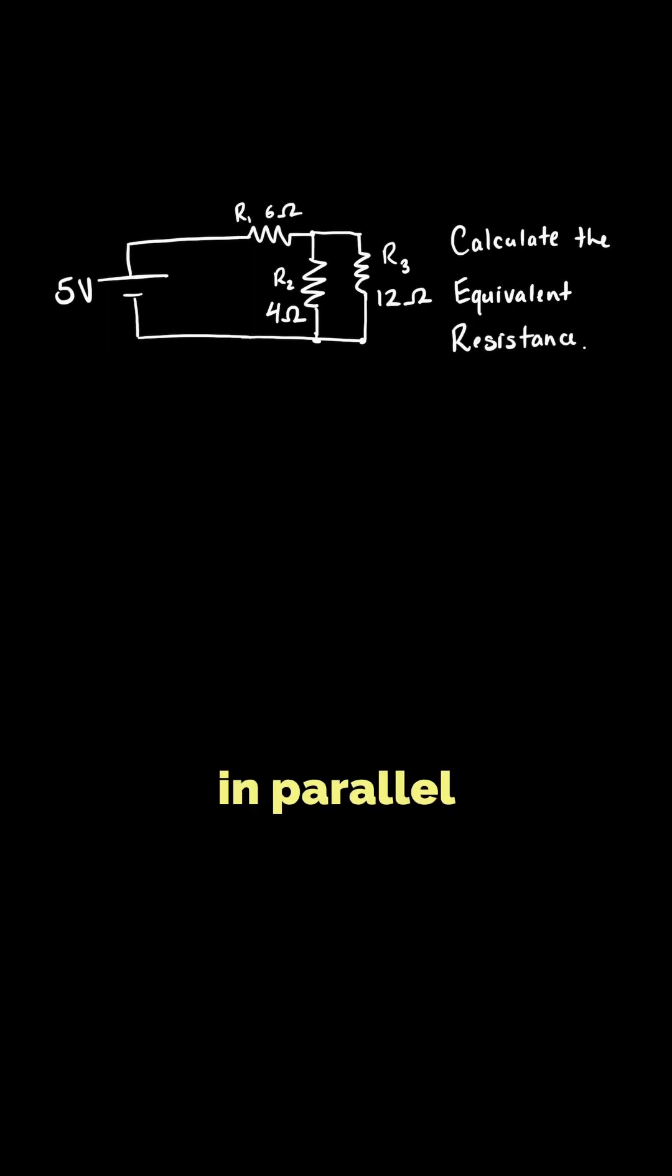two of which are in parallel and one in series with the combination. We need to find equivalent resistance of the entire circuit. Let's break it down in three simple steps.